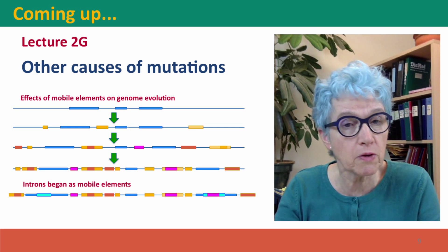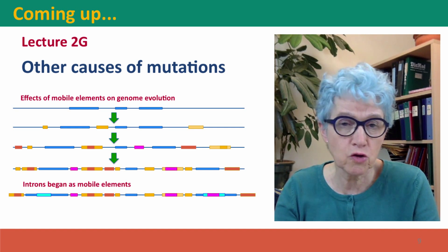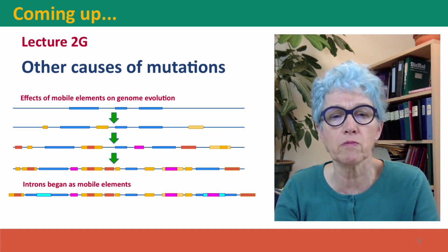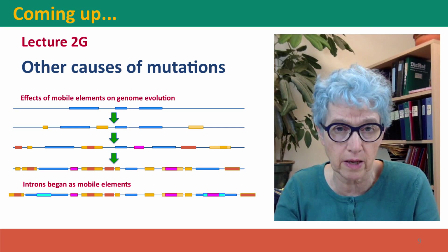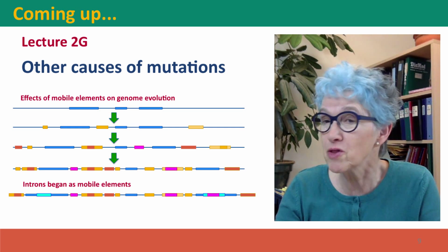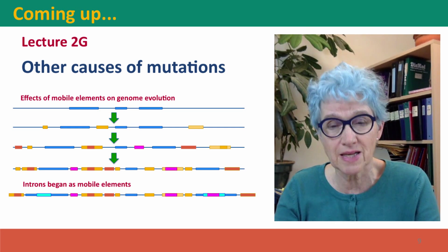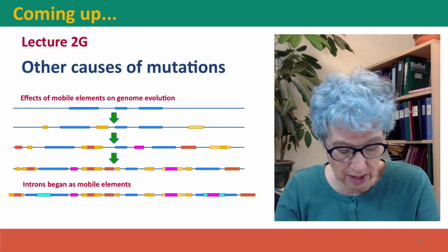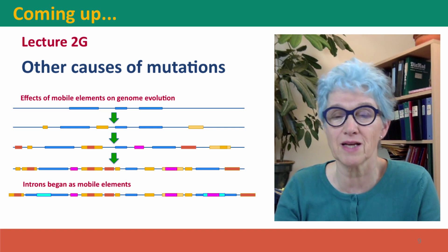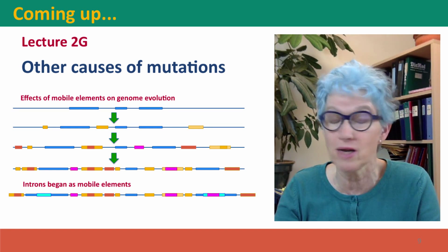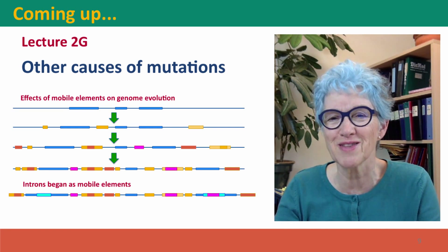Coming up next, we're going to talk about other causes of mutation. So far we've just thought about mutations caused by errors by DNA polymerase, but there are a lot of other ways that DNA sequences can change. We'll talk about those in Lecture 2G — I hope to see you there.